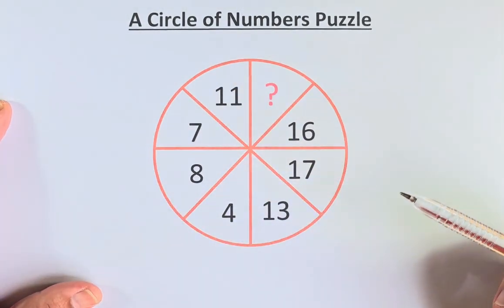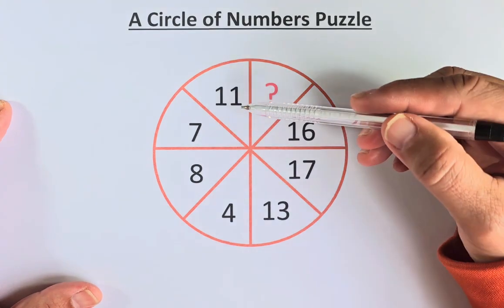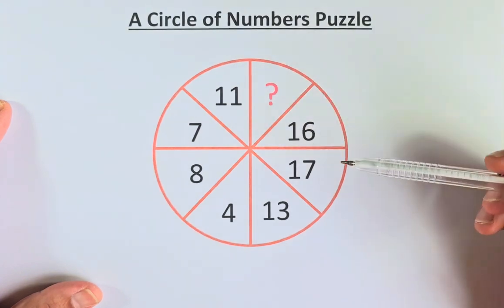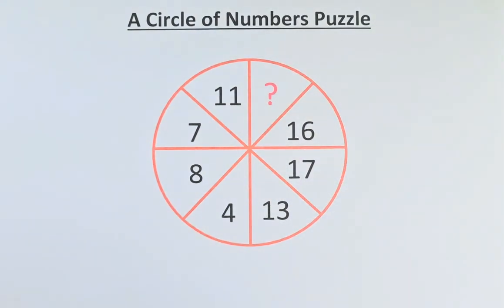The next way to do it is look at the opposite end. 11 and 13 is 2, 7 and 17 is 10, 8 and 16 is 2 double. So it doesn't make sense either.